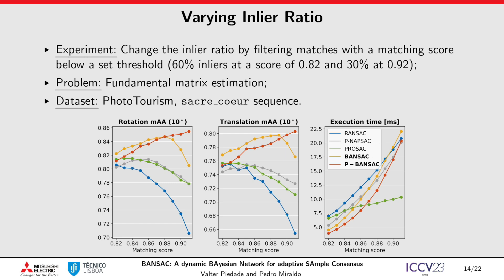For our second experiment, we vary the inlier ratio of the data by filtering matches based on their matching scores. The only differences between the methods are the sampling strategy and stopping criterion. We observe that our methods are the most accurate and efficient, even at lower inlier rates, meaning that our sampling strategy is successfully distinguishing inliers from outliers.